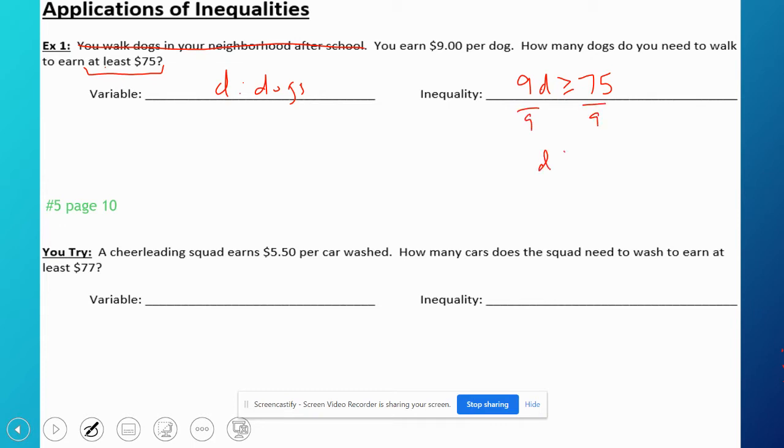nine. Now it doesn't go in evenly—it goes in eight with a remainder of three. You can't walk a third of a dog, so if you want to make at least $75, you're going to have to walk nine dogs.